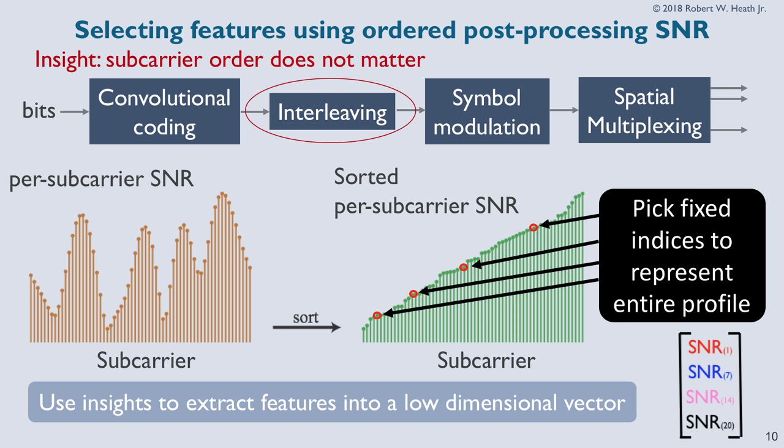After thinking about it for a while, we realized that because we were focusing on the 802.11n system — which has convolutional coding, interleaving, and symbol modulation — the ordering of subcarriers doesn't matter. Because of the interleaving, it shouldn't matter whether the fade is on subcarrier 4 or subcarrier 16; they should in principle have the same effect if your interleaver was good. So we decided to sort the subcarriers from worst to best, and then build our feature vector by taking samples of that sorted subcarrier profile. Note that sort is a nonlinear operation.